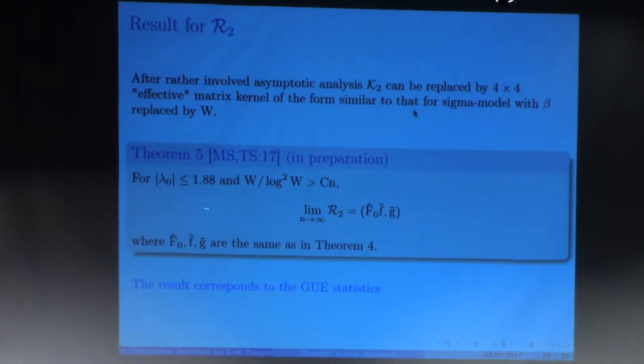And again for this strange condition we are able to prove that when w bigger than n, in fact much bigger up to log square w, then the second correlation function becomes of the GUE type. And so we are able to put GUE statistics from the site of delocalization.